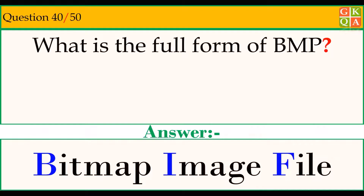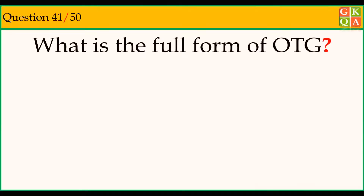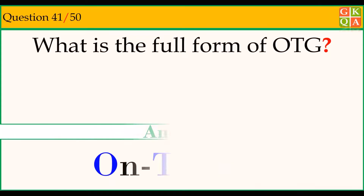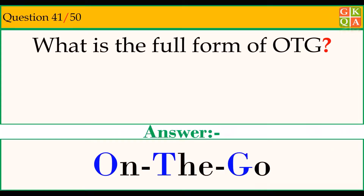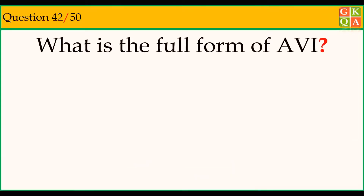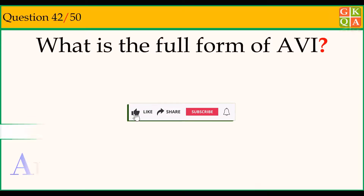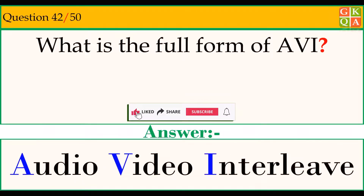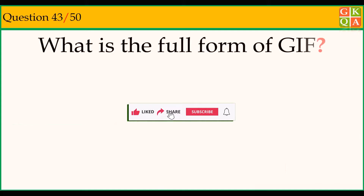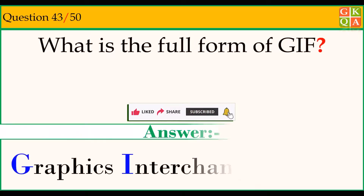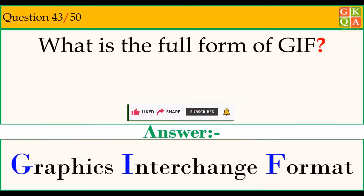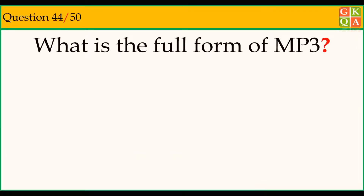What is the full form of OTG? Answer: On The Go. What is the full form of AVI? Answer: Audio Video Interlude. What is the full form of GIF? Answer: Graphics Interchange Format. What is the full form of MP3? Answer: MPG Audio Layer 3.